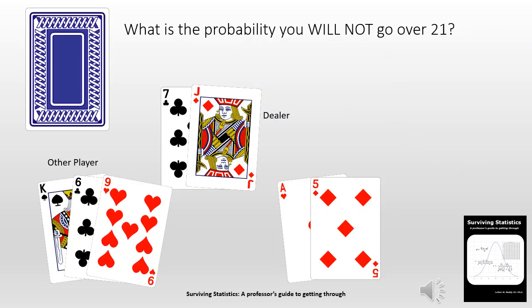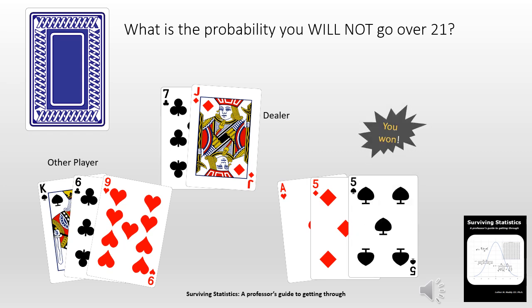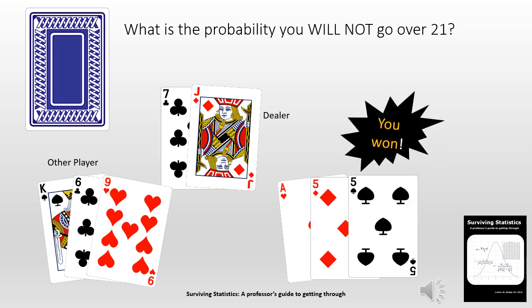Let's see how you do. You go ahead and take another card — it's a 5. You win! You got 21. You beat the odds. Of course, that's not always going to happen when you're gambling, so be very careful.